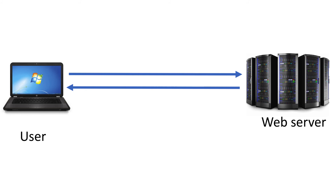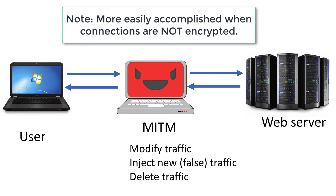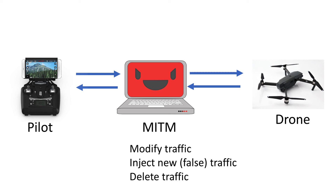Here's our normal setup where we have our user and a web server with traffic flowing between them. A man-in-the-middle attack situates the attacker between the user and the web server, making all traffic accessible to them. They can modify that traffic, inject false traffic, or delete traffic. Imagine this with a drone: we have our pilot and our drone, and then the man in the middle, who can modify, inject false, or delete traffic — causing loss of control of the drone.